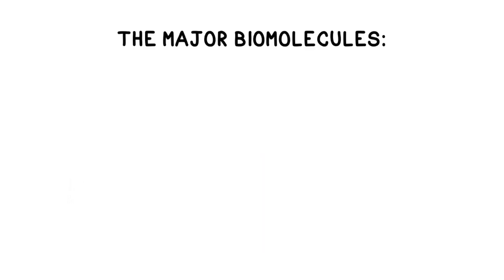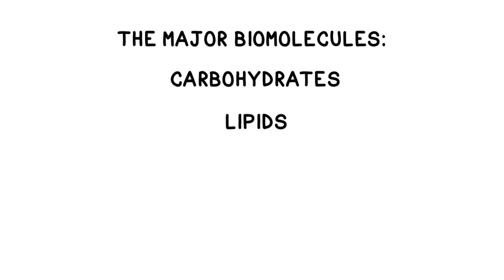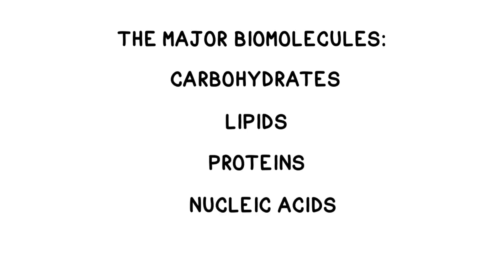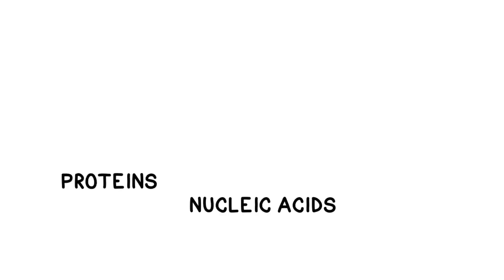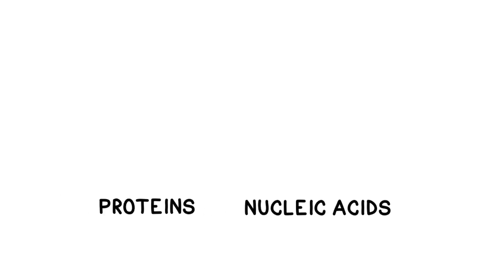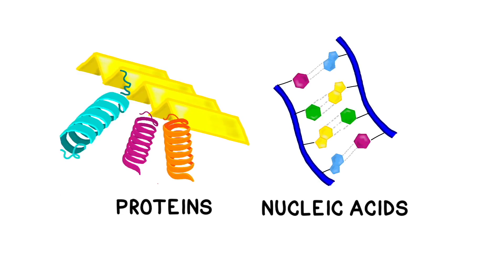There are four major groups of biomolecules—carbohydrates, lipids, proteins, and nucleic acids. Scientists in the 1940s were unsure which was responsible for inheritance, but they believed that the top two contenders were proteins and nucleic acids.